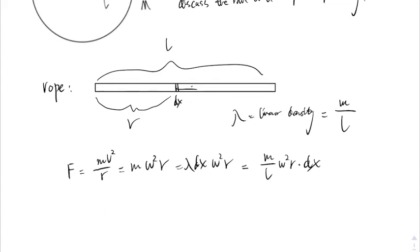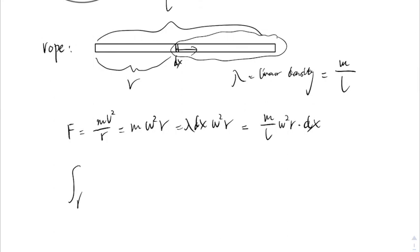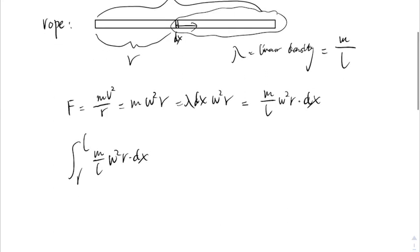And now, which direction are we going to integrate? We integrate to the right, because when the rope is rotating around, the parts that's behind r will drag it outward, centrifugal force. So we can integrate from r to l.